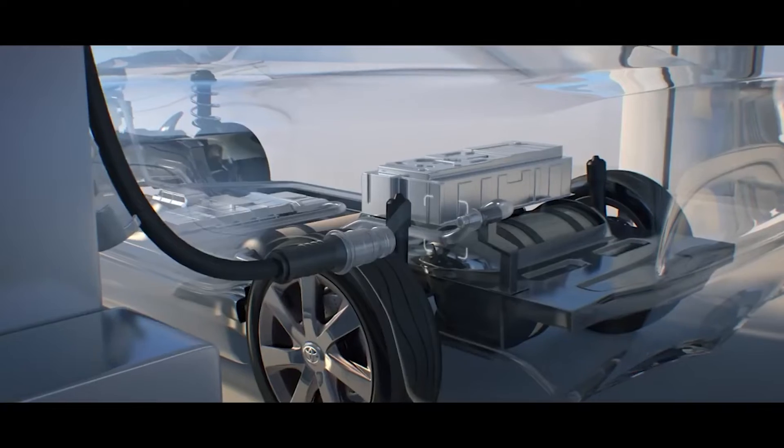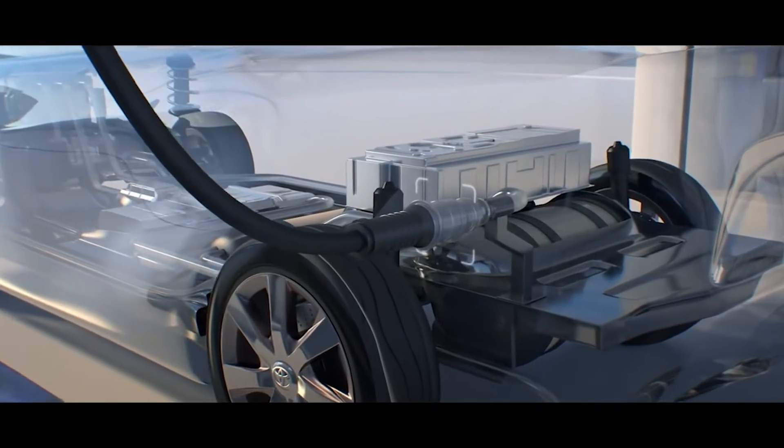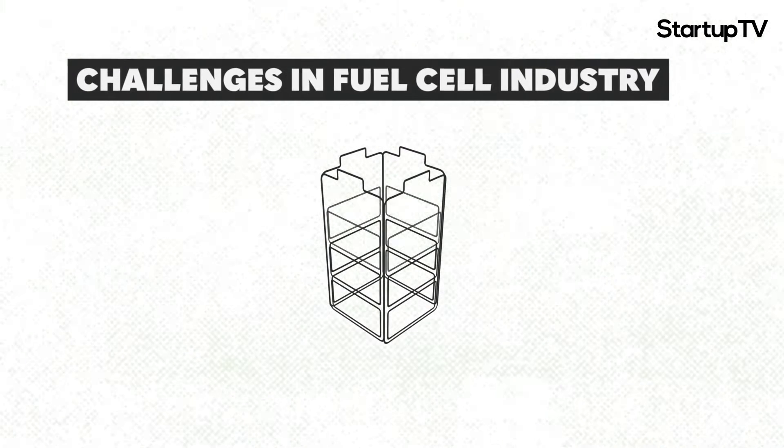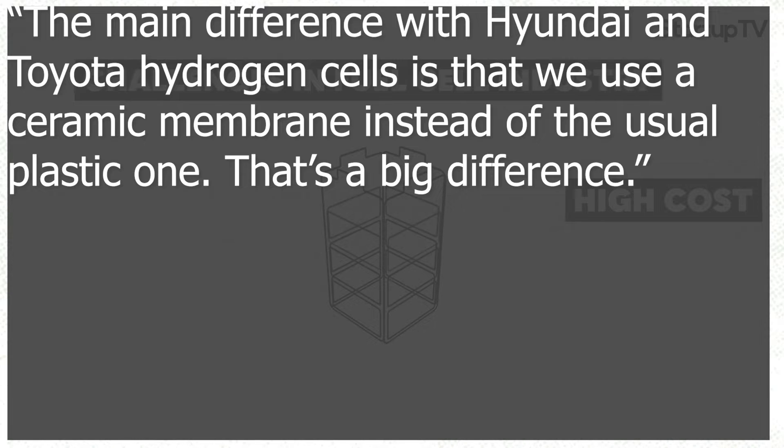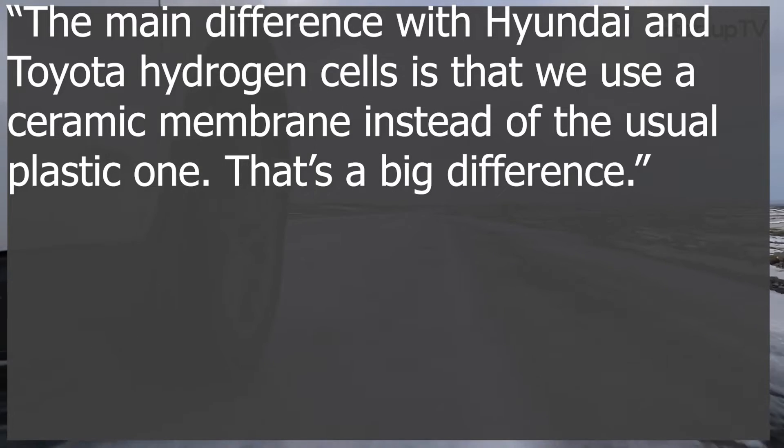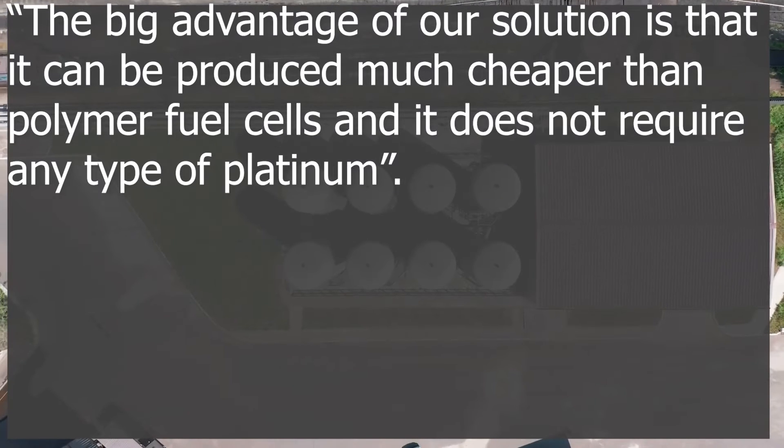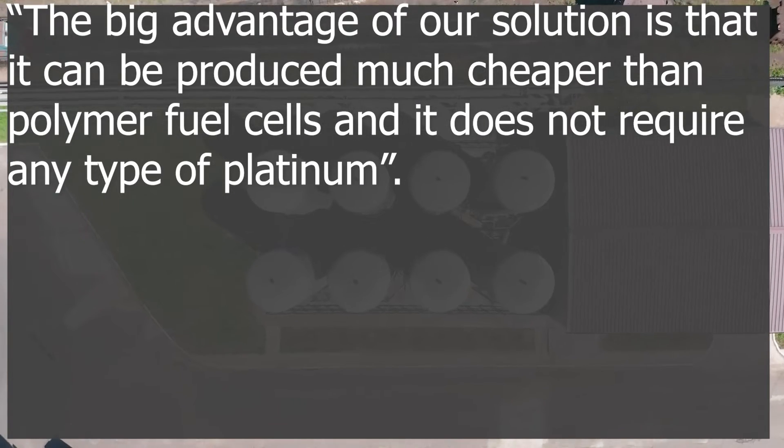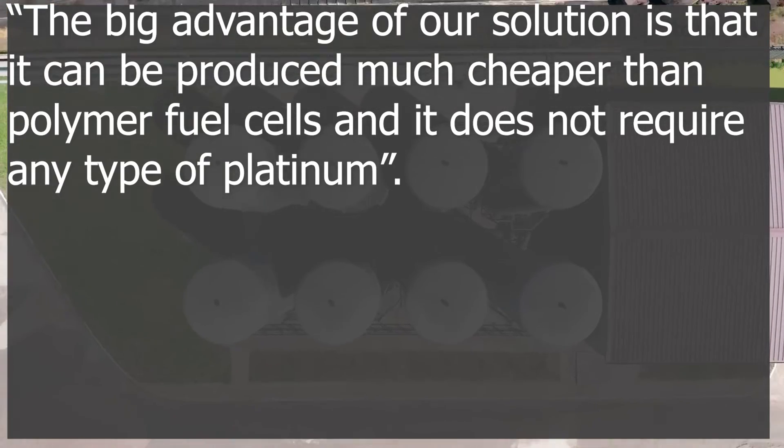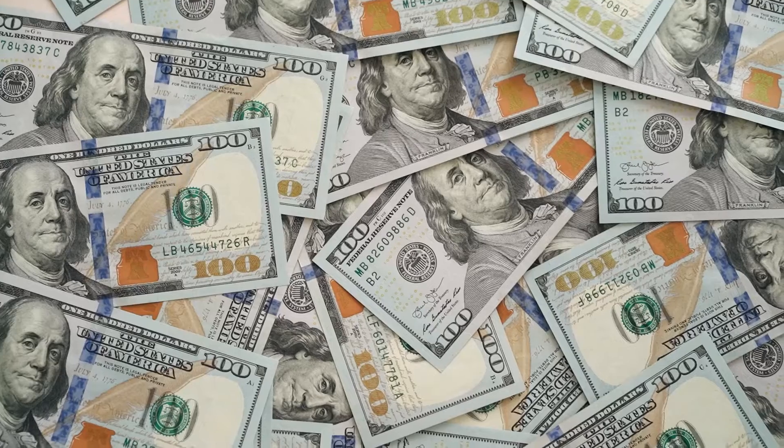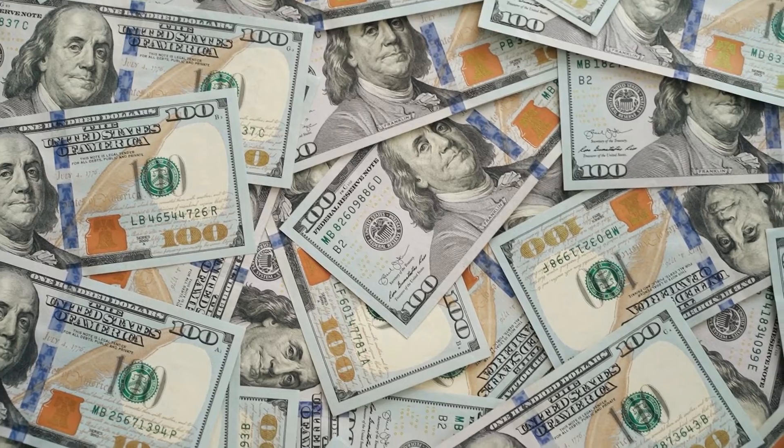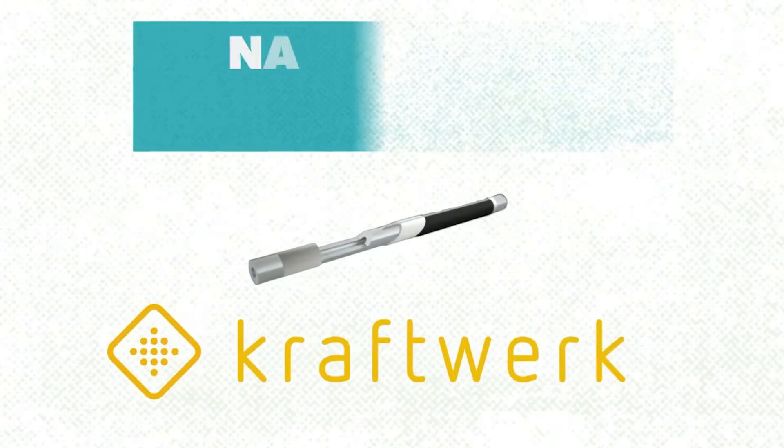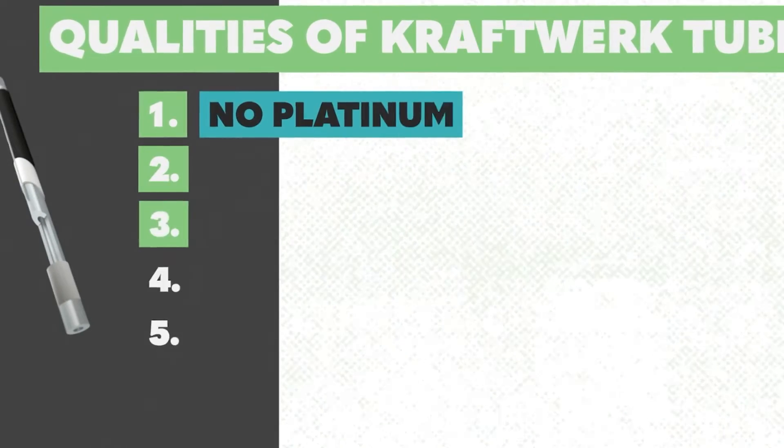Now, where Kraftwerk and VW's one is different is with the materials used within the fuel cell. Sascha Kühn, Kraftwerk's CEO, explained in an interview with Business Insider Germany: 'The main difference with Hyundai and Toyota's hydrogen cells is that we use a ceramic membrane instead of the usual plastic one. That's the big difference. The big advantage of our solution is that it can be produced much cheaper than polymer fuel cells and it does not require any type of platinum.' And as I'm sure you know, platinum is really expensive, so a cheaper overall package.